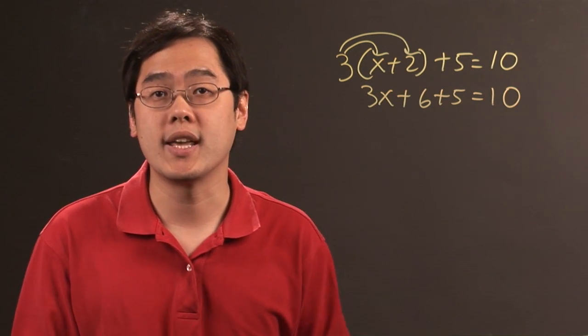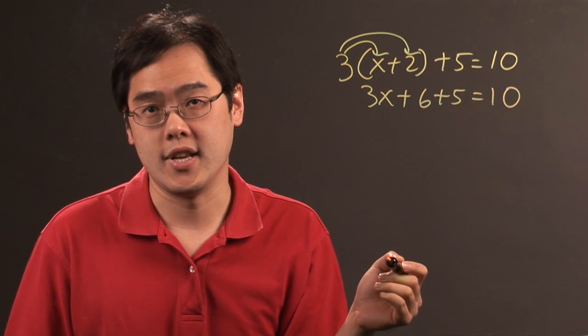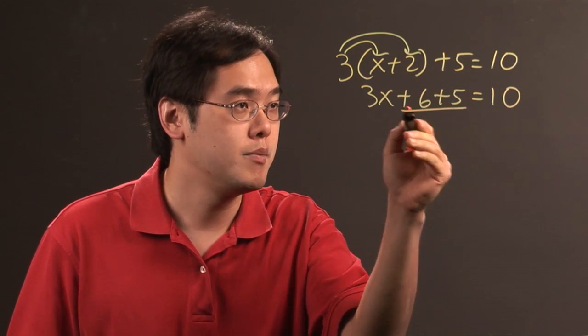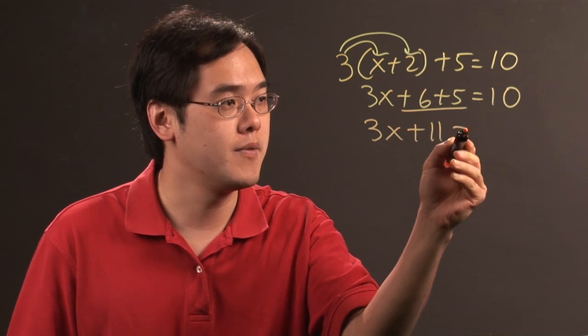Now, in any equation, you want to get x by itself. But first, see if you have any like terms to combine. As you can tell, 6 plus 5 gives you 11. So you have 3x+11=10.